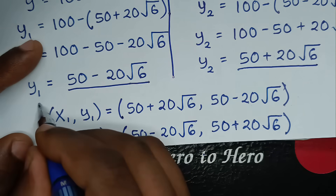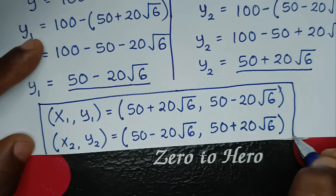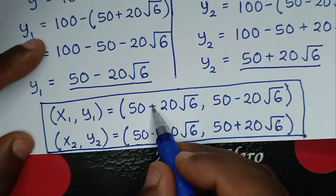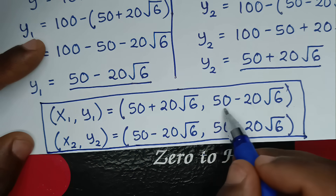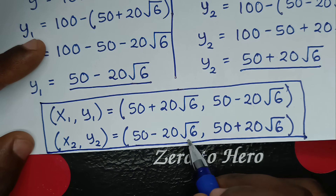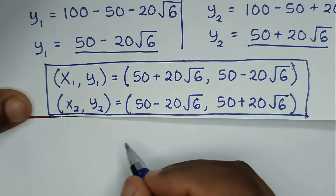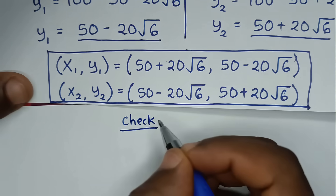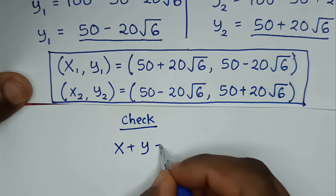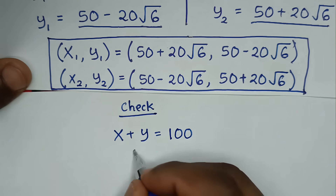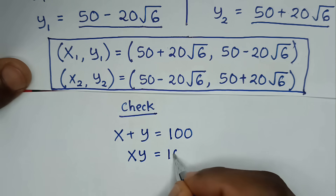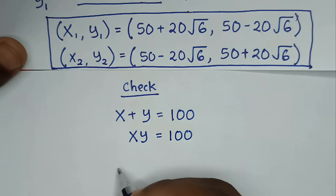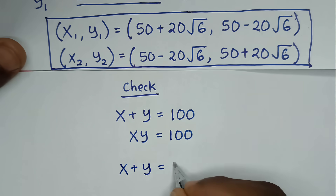These are all our solutions. Notice that the value of x in the first solution is the value of y in the second solution, and vice versa. Now let's check the solution to verify it is correct, using the original equations x plus y equals 100 and x times y equals 100.